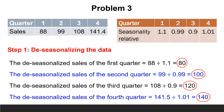The deseasonalized sales of the fourth quarter is 141.4 divided by 1.01, equals 140. The deseasonalized data for the four quarters are 80, 100, 120, and 140. Obviously it has a trend — the sales of any quarter is 20 units more than the previous one.